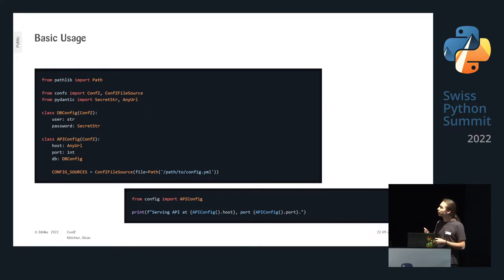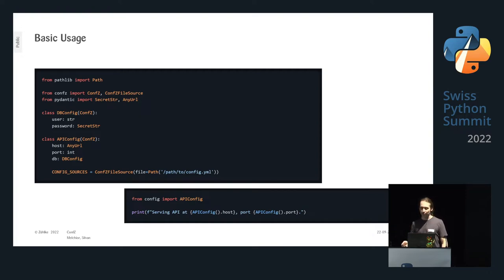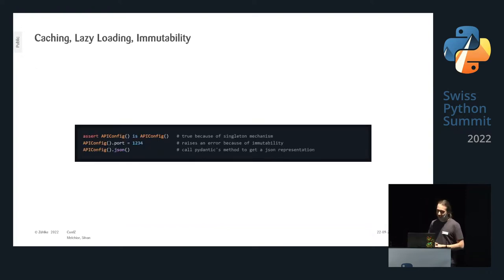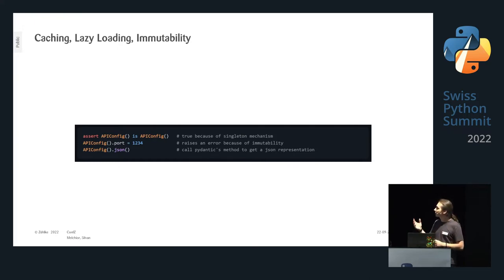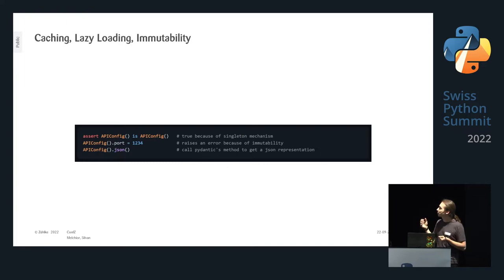Under the hood, when you access one of these values it gets loaded from the file and then persisted — it only loads once. It also only loads at first access, not at import, because that's bad practice. Conf-set also has caching and lazy loading, so if you instantiate ApiConfig twice, the 'is' operator (which checks for identity at the same memory location) returns true. If you try to overwrite it, it will fail because the config is immutable. You can also use the full power of pydantic — for example, JSON serialization.